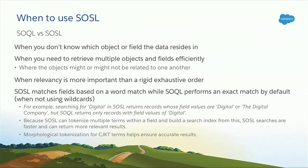Another difference: SOSL will match on individual words in a field, whereas SOQL performs an exact match unless you use a wildcard character. For example, searching for 'digital' in SOSL will return accounts containing that word anywhere in the field, whereas SOQL will only return records where 'digital' is the exact sole value in that field. Additionally, with SOSL we do linguistic processing like spelling correction and lemmatization. We also support Chinese, Japanese, Korean, and Thai languages, which are more difficult for traditional databases to handle.